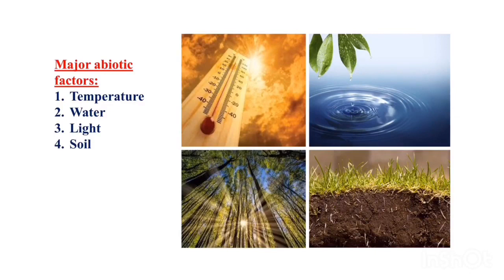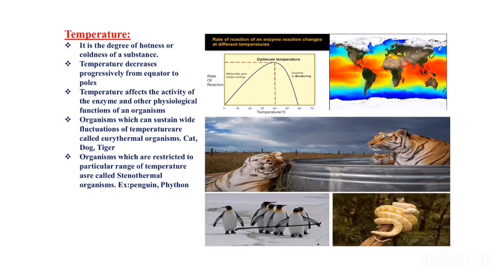There are four major abiotic factors which we are going to study: temperature, water, light, and soil. First we shall go with temperature. Temperature is the degree of hotness or coldness of a substance. Temperature decreases progressively from the equator towards the poles. Temperature affects the activity of enzymes and other physiological functions of an organism.